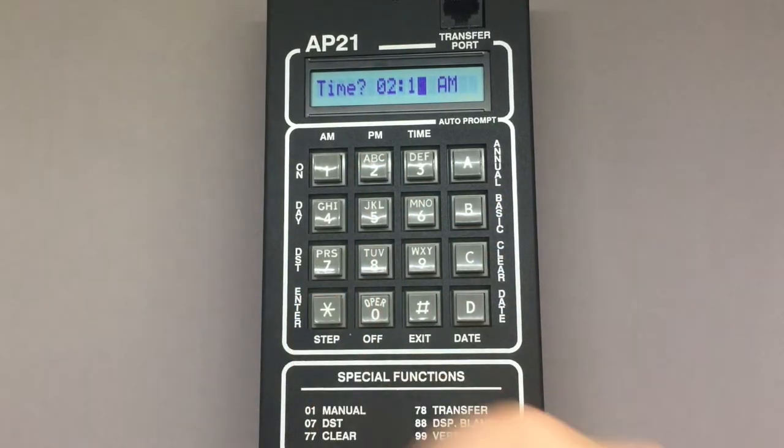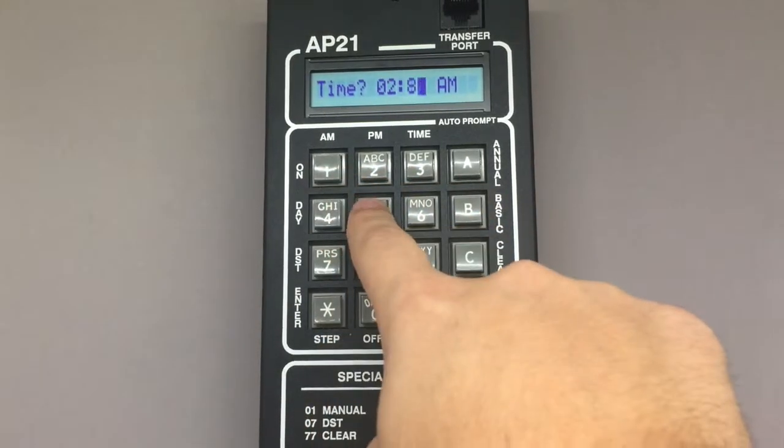Pressing star will move the cursor to the minute input. Using the keypad again, I'm going to press 15 followed by star.